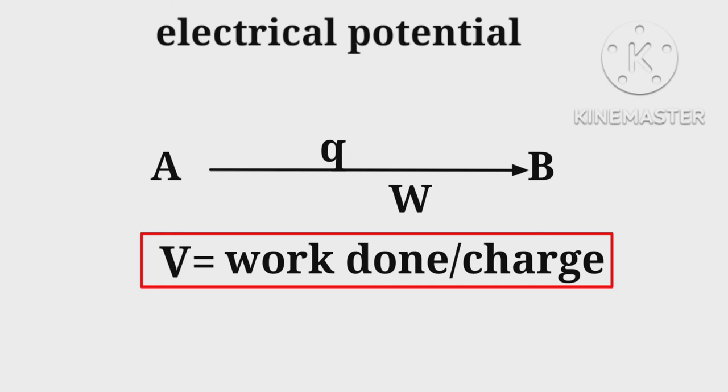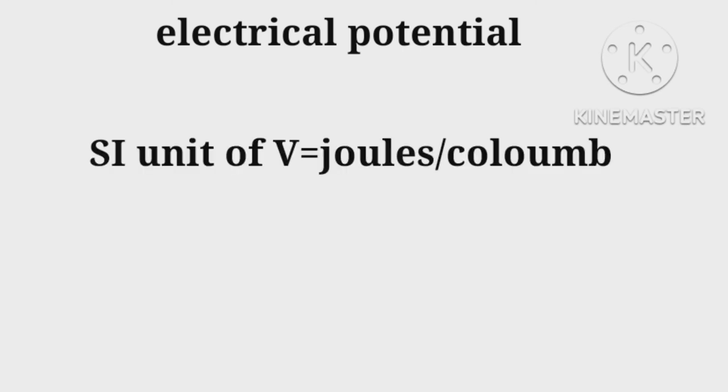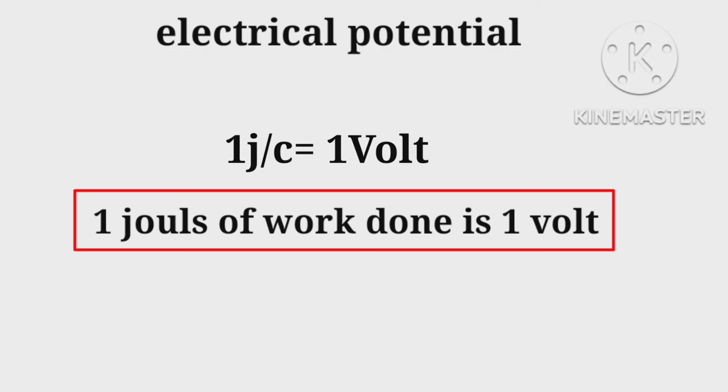SI unit of V = joules per coulomb = J/C. One joule of work done per coulomb is one volt.